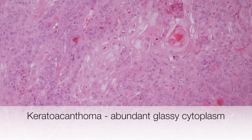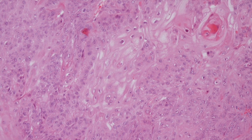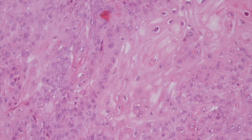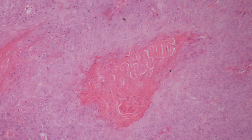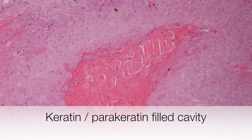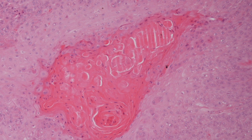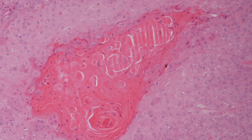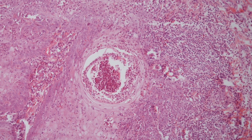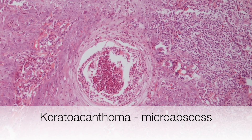On higher power, you can see that some of the keratinocytes have abundant glassy cytoplasm. Here is another feature of keratoacanthomas — the keratin- and parakeratin-filled cavities. And this area shows a micro-abscess.